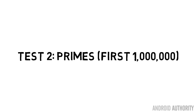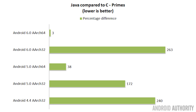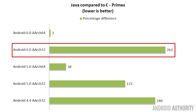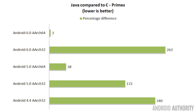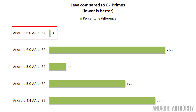The next test calculates the first million primes using trial by division. I'm using 64-bit integers for this, and 64-bit division on a 32-bit Java program is quite slow. The results are quite amazing. On 32-bit Android 6.0 Marshmallow, Java is 263% slower than C. On 32-bit Android 5 and 4.4, it's 172% and 240% slower respectively. However, on 64-bit Android 5.0, it's only 38% slower. And on 64-bit Android 6.0, it's only 3% slower — a result largely due to the new ART runtime with its ahead-of-time and optimizing compiler in Marshmallow.